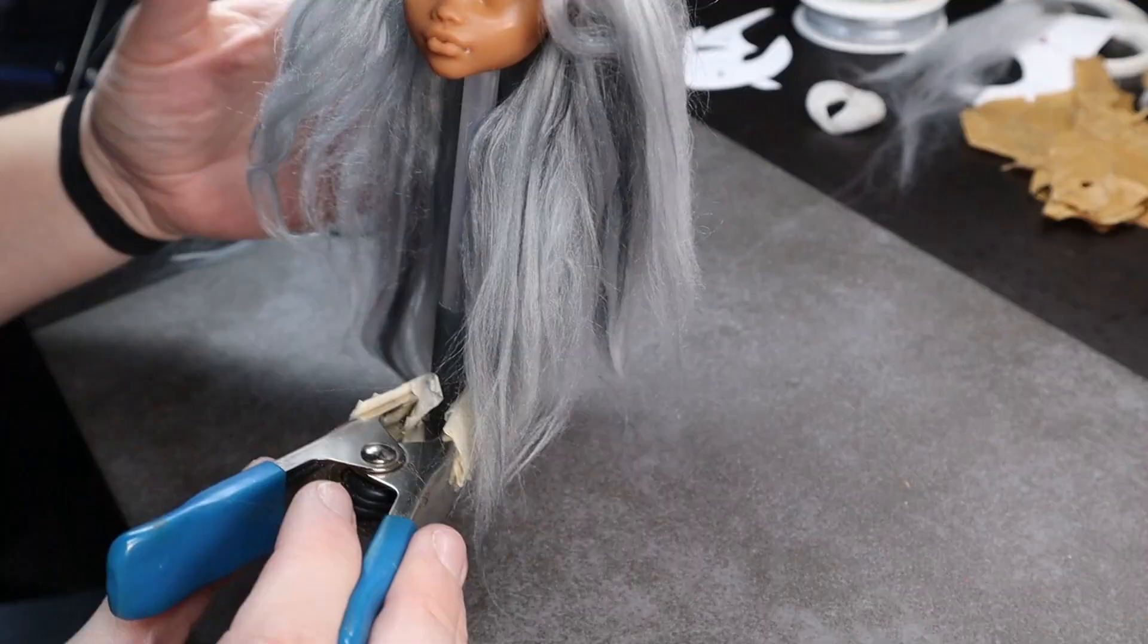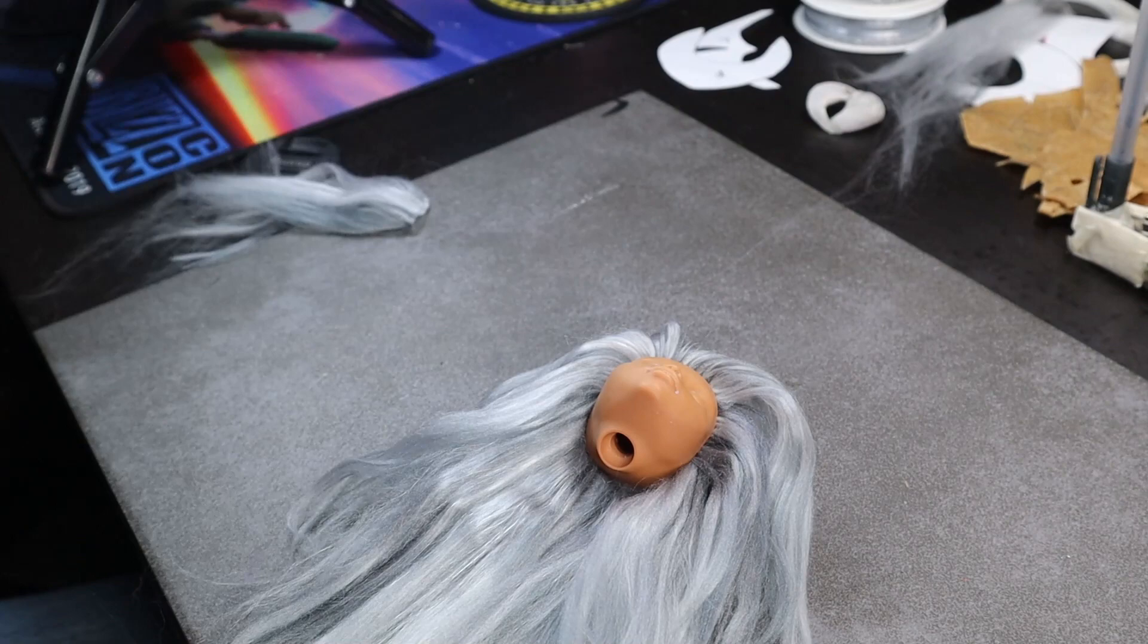Once the wefts have dried, I can secure the rerouted portions with a little bit of the liquid fusion as well. I just put a little bit of glue on the head and then I use a q-tip to swirl it around, making sure to touch those plugs.